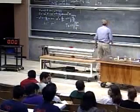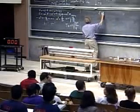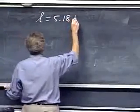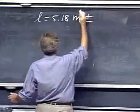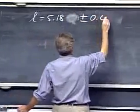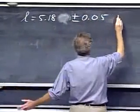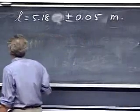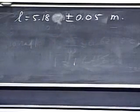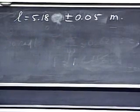The length is 5.18 meters and the uncertainty is about 5 centimeters. We can't measure it any better. And the mass at the end of it, which doesn't enter into the period, is about 15 kilograms.